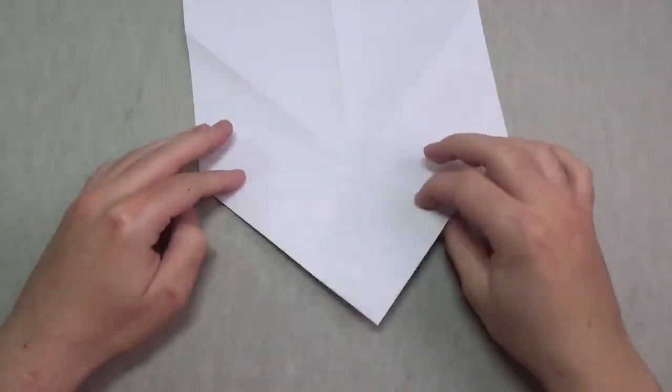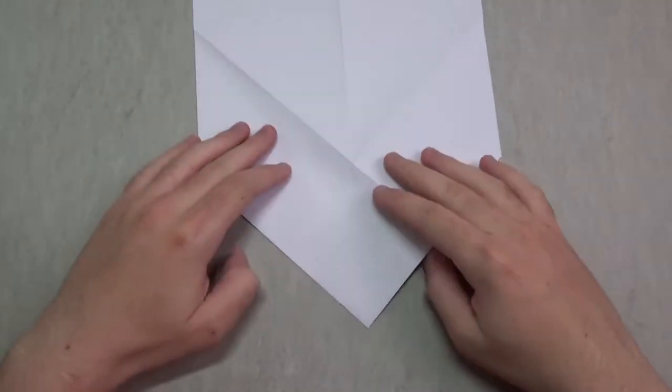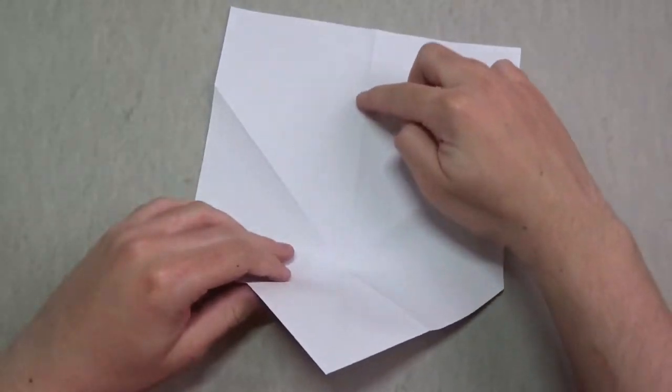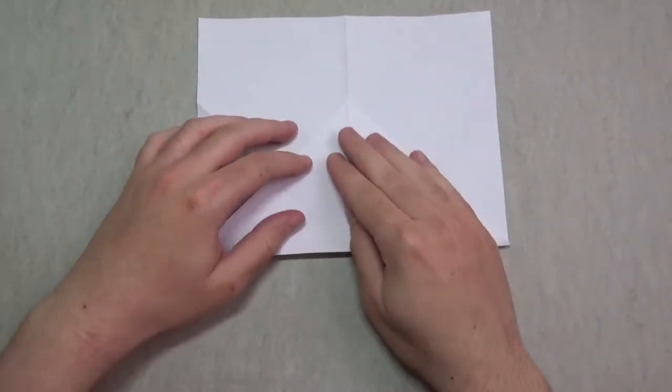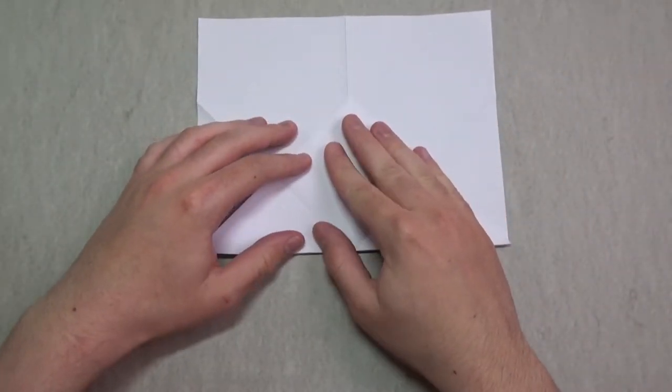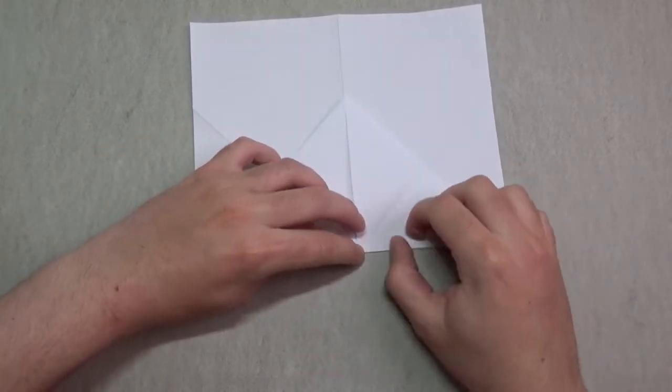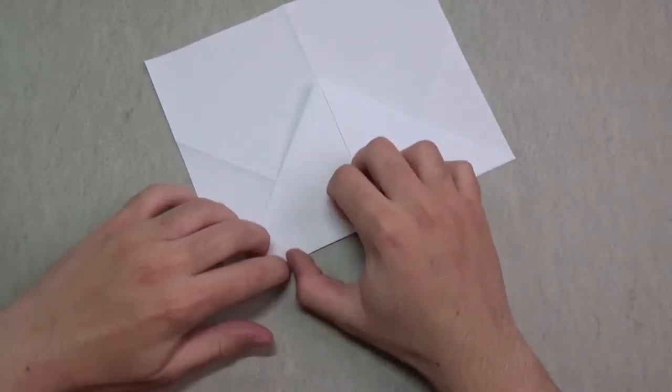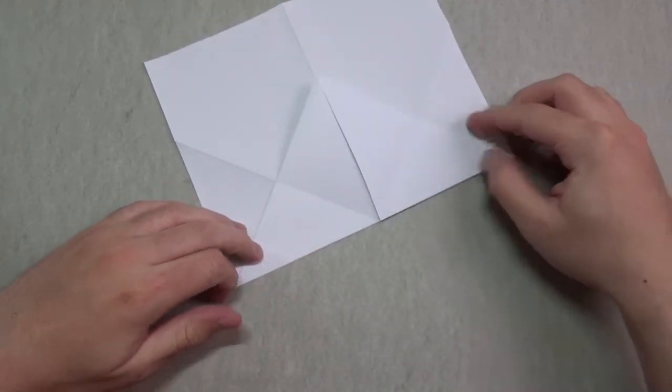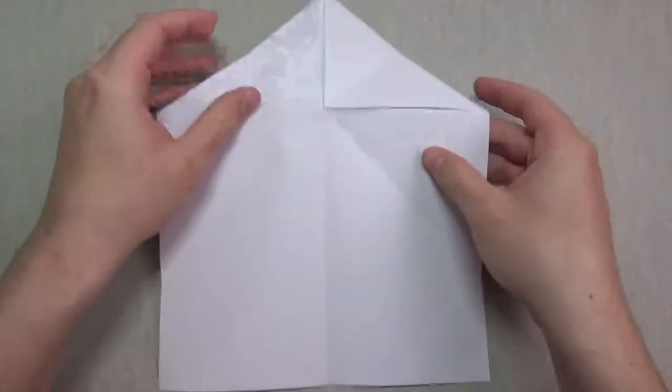Now we're going to fold this up in between these two points. Make sure that this point aligns with the middle. Crease that nice and sharp. Now unfold and turn back over.